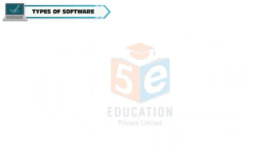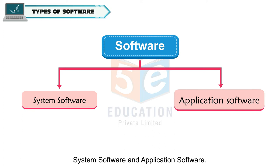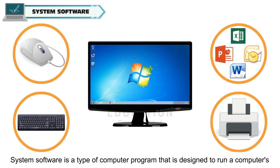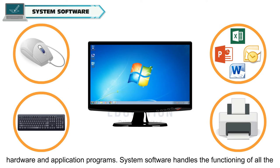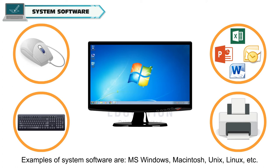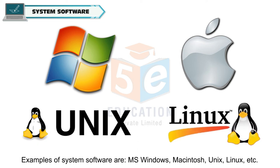Types of Software. Software can be classified into two main types: system software and application software. System software is a type of computer program that is designed to run a computer's hardware and application programs. System software handles the functioning of all the components of the computer. Examples of system software are MS Windows, Macintosh, Unix, Linux, etc.